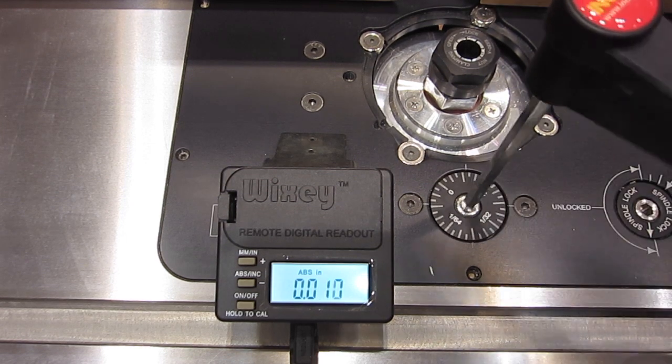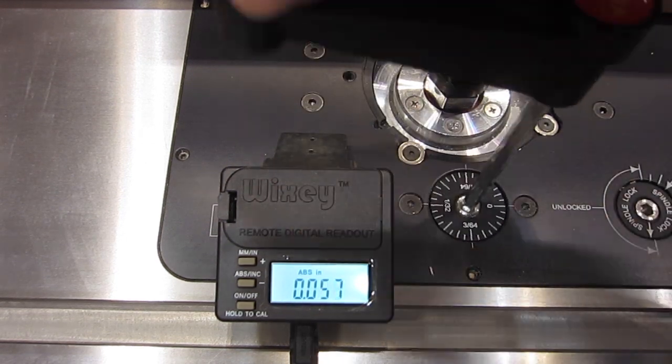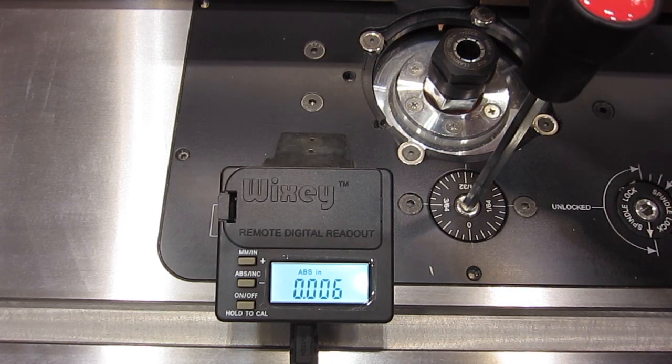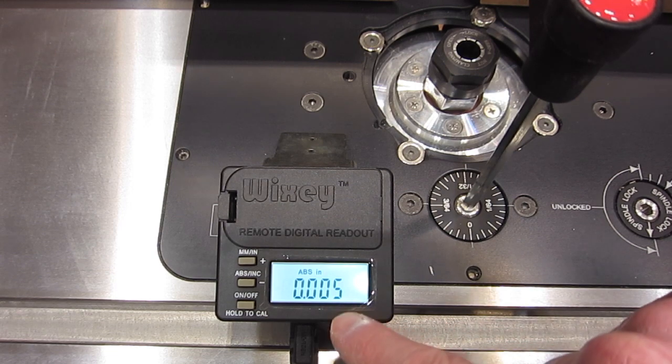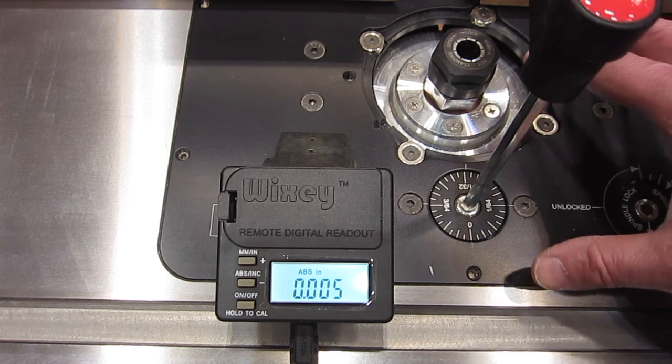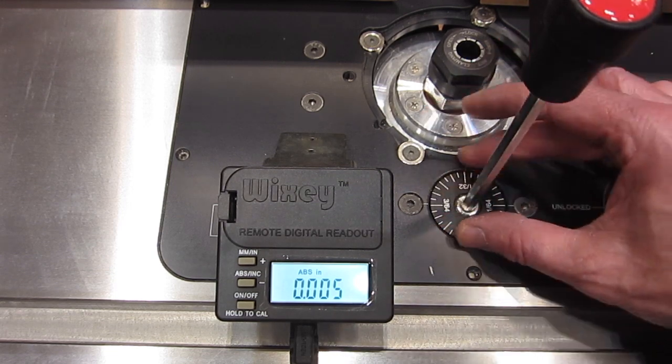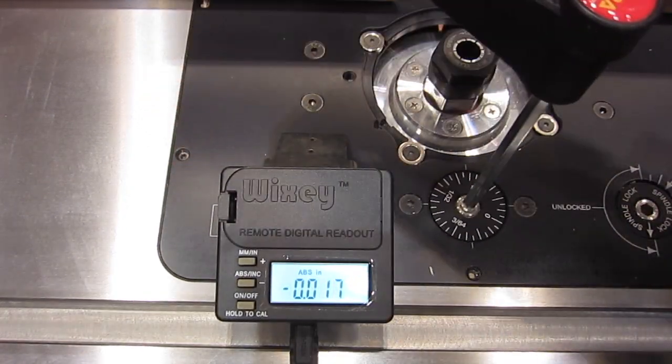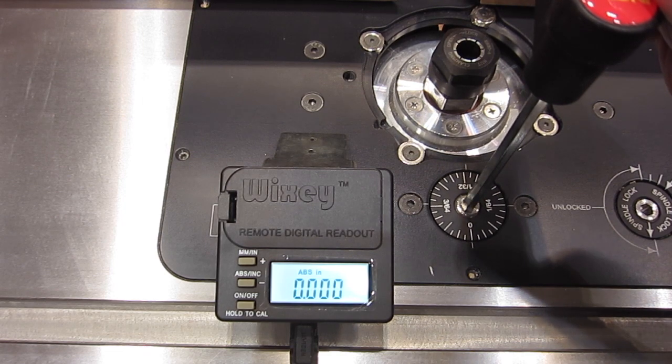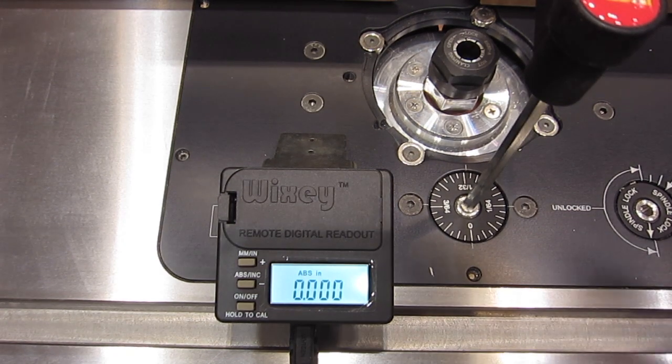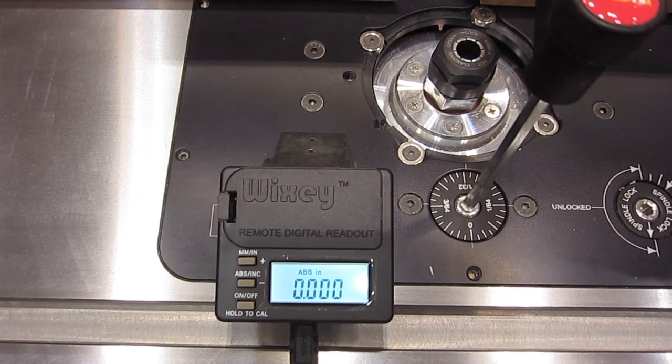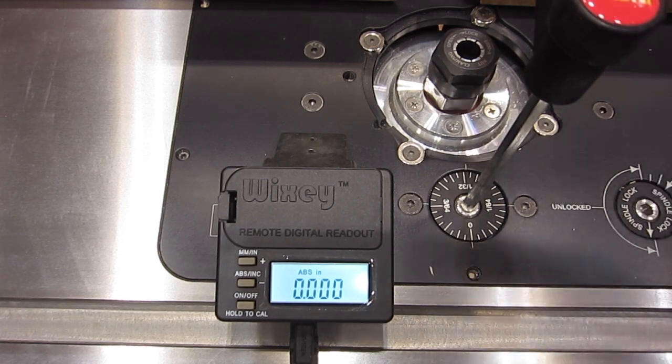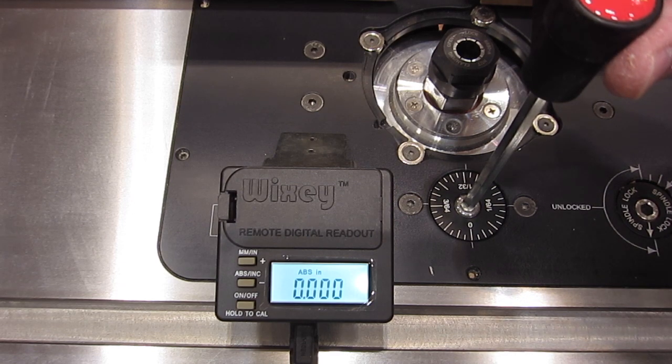Now if I go up and then back I don't get exactly zero here and I think that is the hysteresis of the threads on the Jessam lift, because if I go back this way and come up clockwise, meaning raising the router, then I always go to zero. So I think for consistency, as long as I always move in the same direction, let's say clockwise to be lifting the router up, then you can get excellent repeatability.